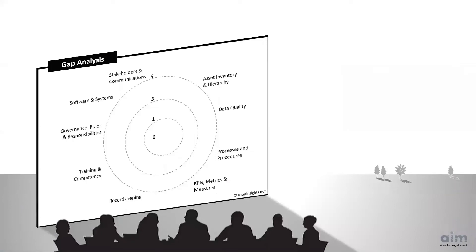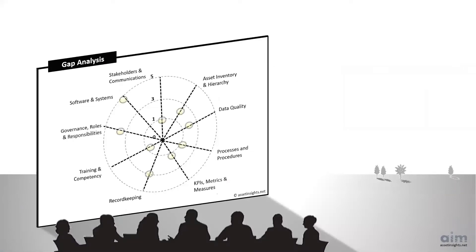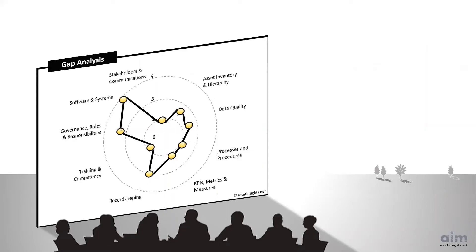Next in the gap analysis, the scores for each question are plotted on a radar chart. This provides a means to see all scores together in a single view. By linking the scores across the radar diagram, the gap profile appears.